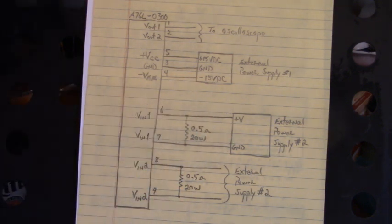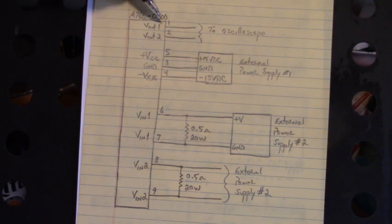Then we reversed polarity so that we had positive down here and ground up here with current flowing in the opposite direction. And the output on pin 1 went negative.